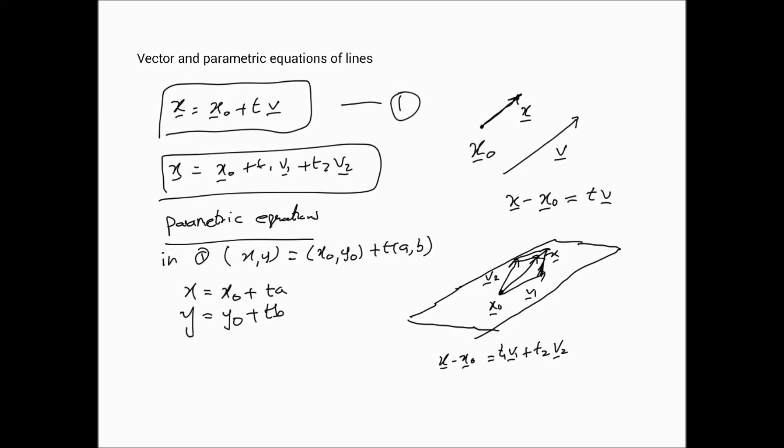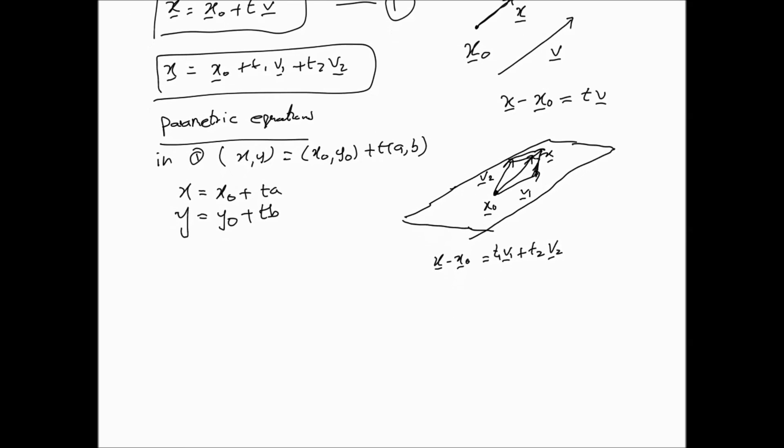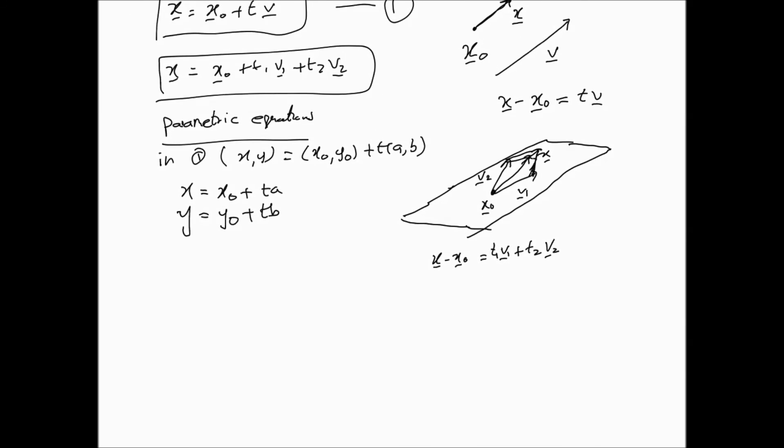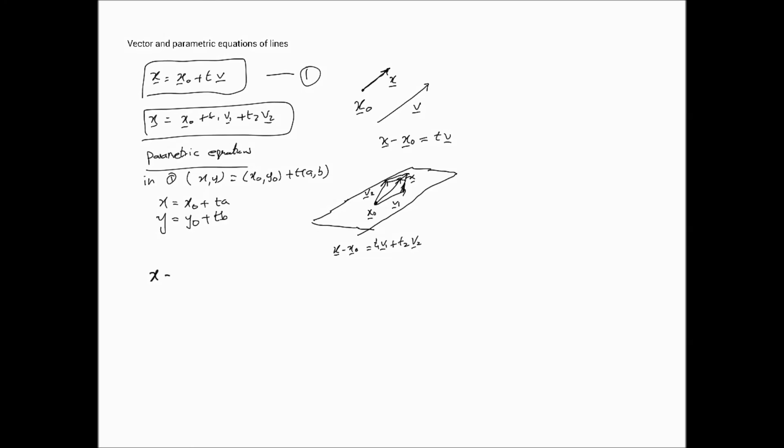In a similar way, we could easily get the parametric equations associated with the vector equation of the plane. In that case, we end up with (x,y,z) equals (x0, y0, z0) plus t1 times (a1, b1, c1) plus t2 times (a2, b2, c2).